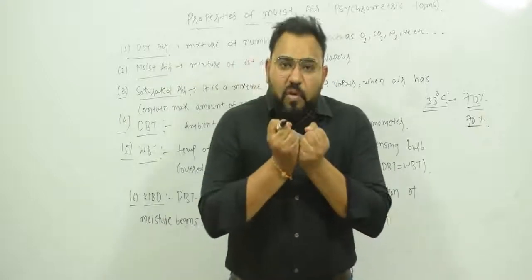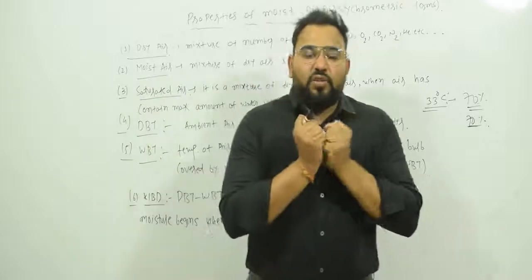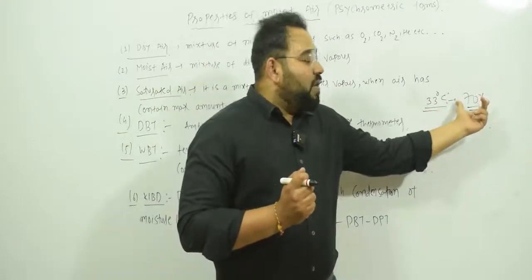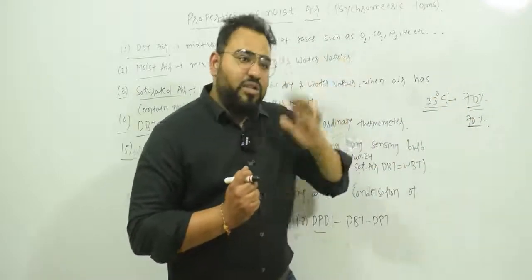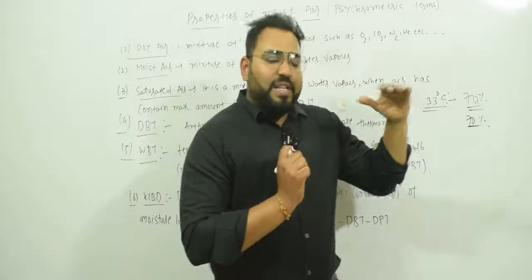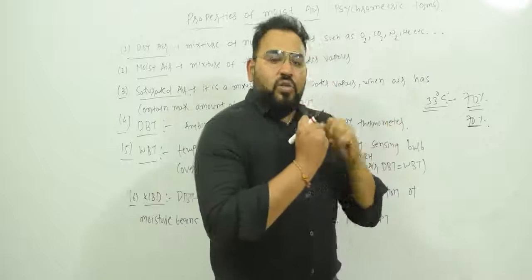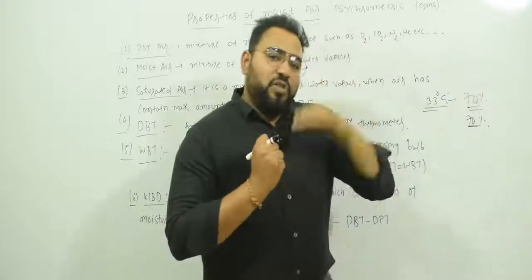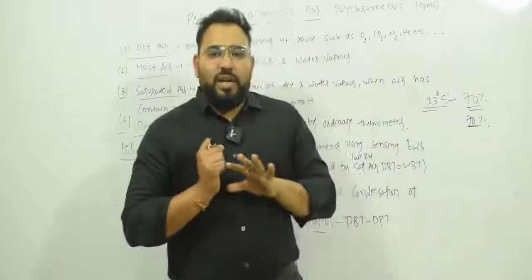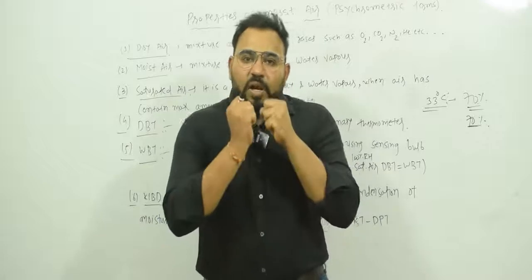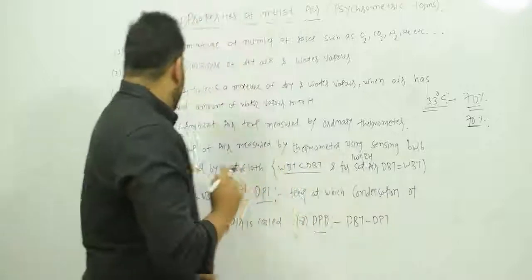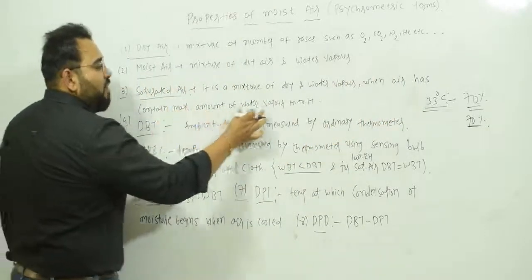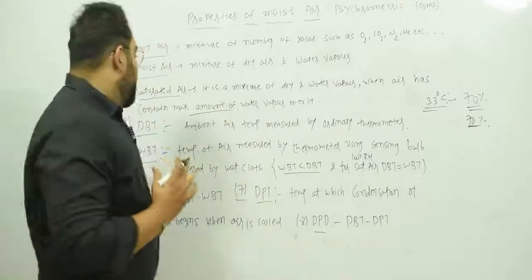But if the water vapor present is now 70 percent — the maximum the air can hold at 33 degrees Celsius — then it is saturated air. Saturated air means it contains the maximum amount of water vapor that it can hold at that temperature. This depends on temperature and pressure. If the air is holding its maximum capacity of water vapor, it is saturated; if not, it is unsaturated.